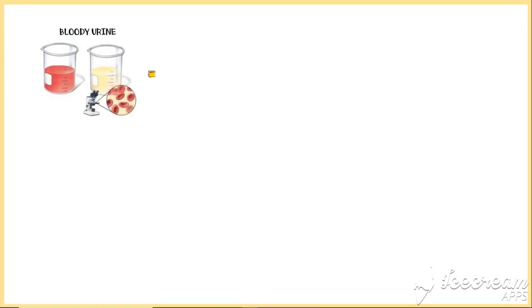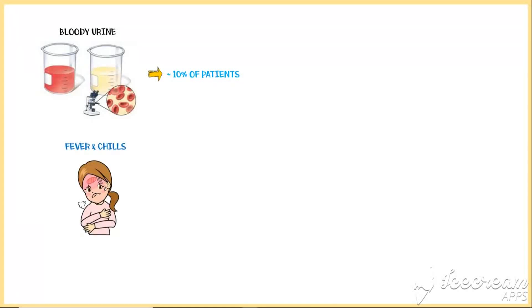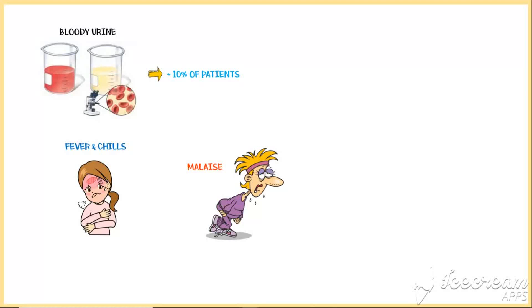Bloody urine may present in about 10% of patients with urinary tract infections. Some people may also have fever, chills, and malaise. However, these symptoms usually appear in more complicated disease.